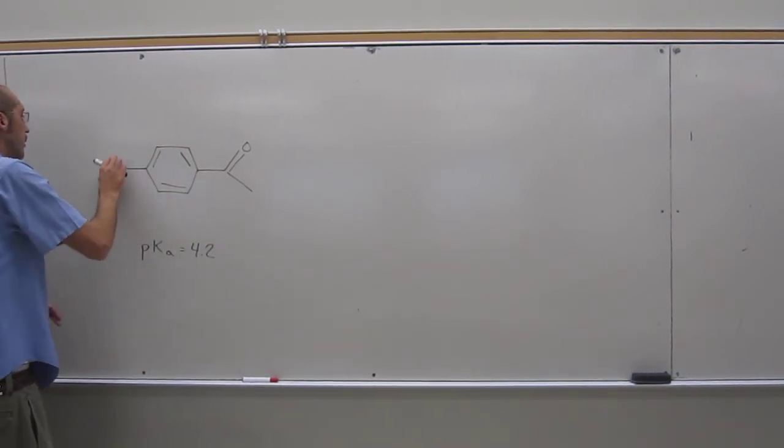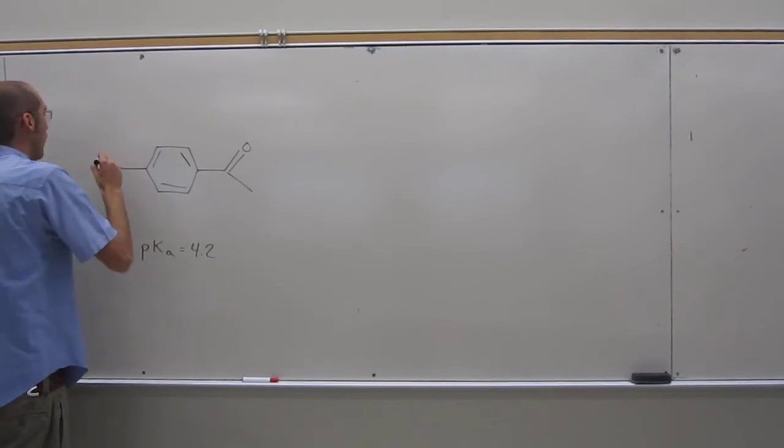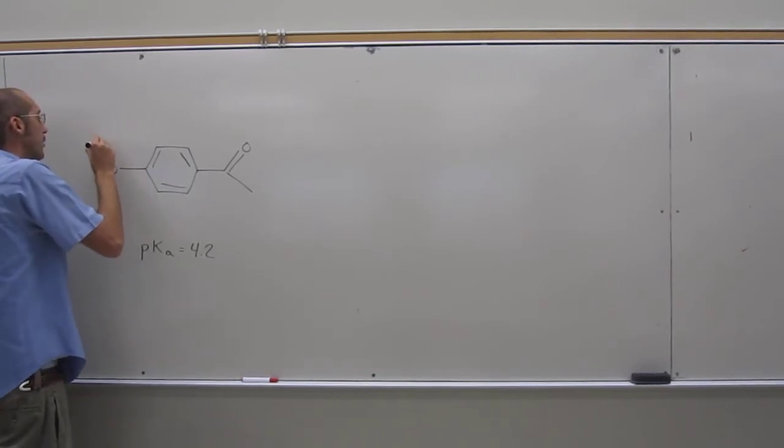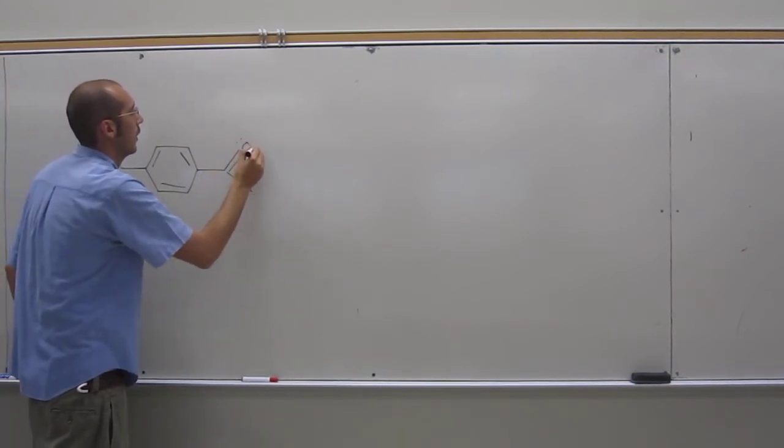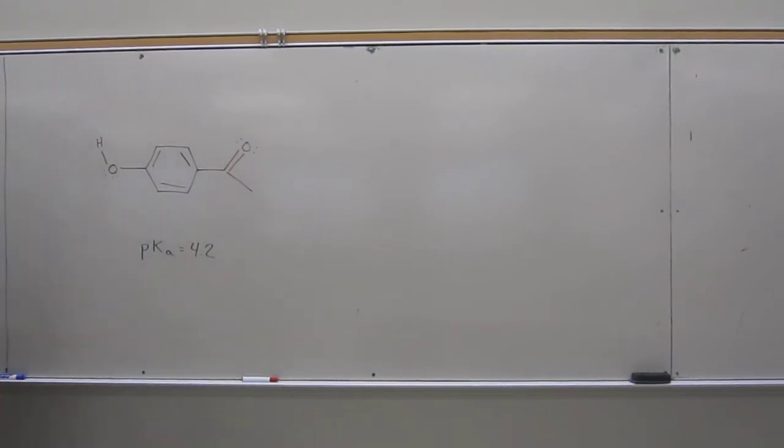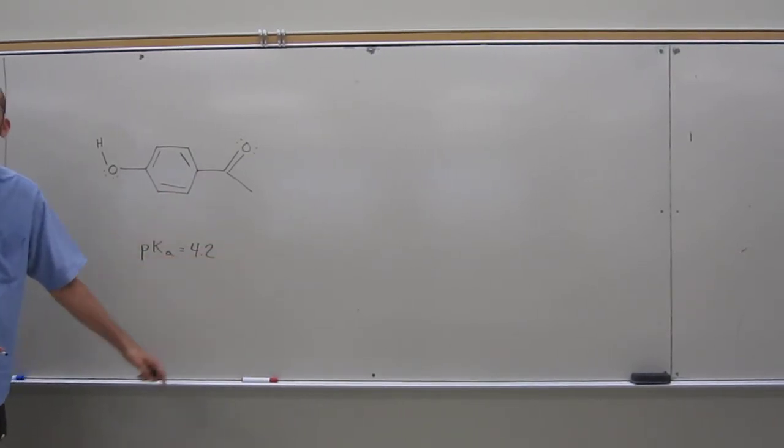Of course, hopefully you can figure out that the hydrogen-heteroatom bond is going to be the acidic proton. So why is this pKa so low? It's because the conjugate base is more stable than the acid.